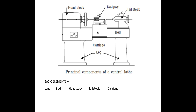The second part is the bed. The main function of the bed is to support all parts of the machine. There are two types of beds: the first type is V-type bed, and the second is flat-type bed. Nowadays, a combination of V-type and flat-type bed is used in lathe machines. The material of the bed is also gray cast iron.